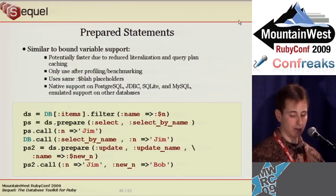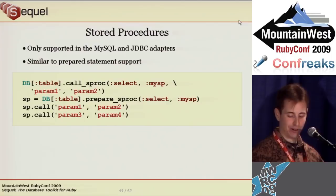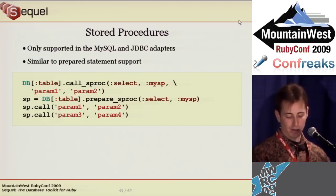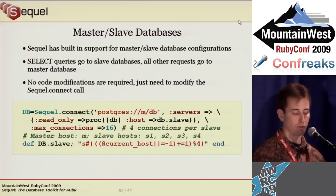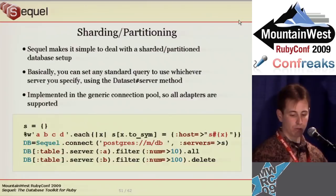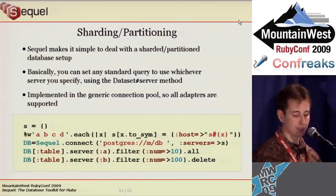Sequel also supports database stored procedures in the MySQL and JDBC adapters, similar to prepared statement support. The API is a little strange — you call the database stored procedure on a dataset object and specify a query type — but it's done this way so you can have a stored procedure that returns model objects as well as one that doesn't return rows. Sequel has built-in support for master-slave database configurations. Moving from a single database to a master-slave configuration can be done just by adding the servers option to the connect method with a read-only key. Sequel will then use the slave for selects and the master for all other queries. The master-slave support is really just a subset of generic sharding support — you can choose which server to use for any query with the server method.